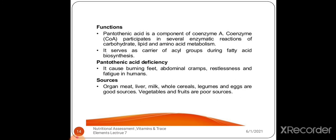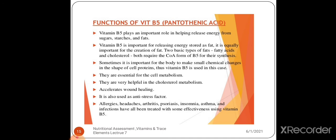Dietary sources of pantothenic acid: organ meat, liver, milk, whole cereals, legumes and eggs are good sources. Vegetables and fruits are also good sources. Pantothenic acid (vitamin B5) plays an important role in helping release energy from sugars, starch and fat.